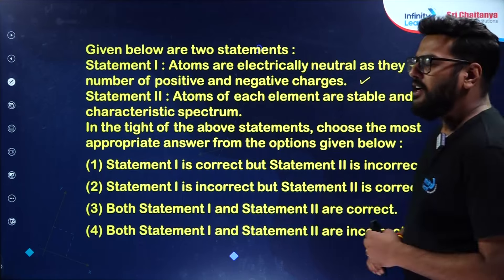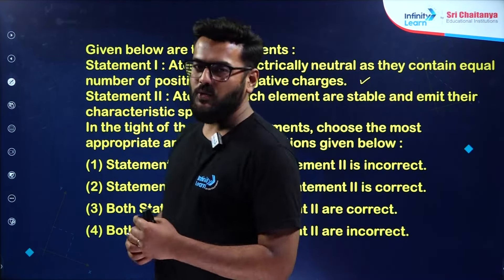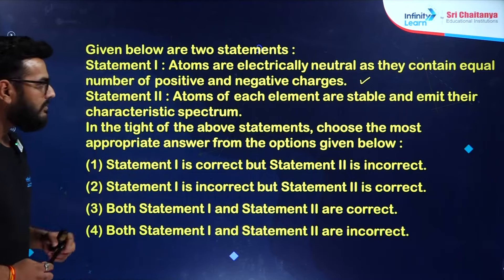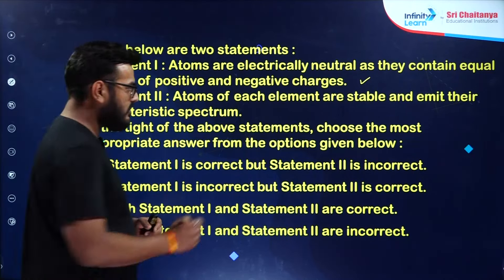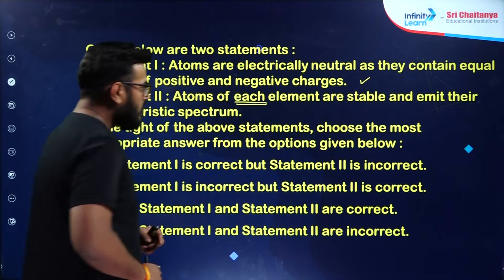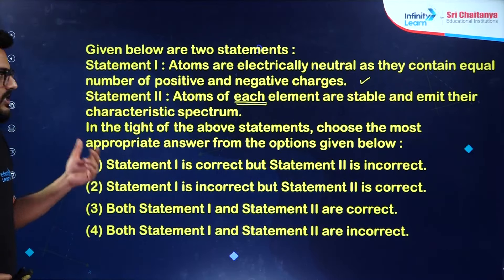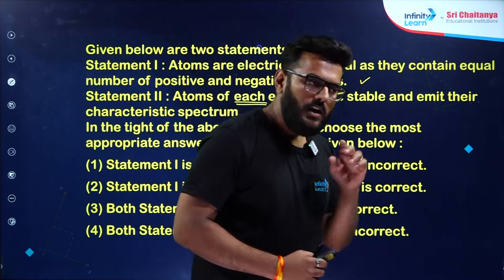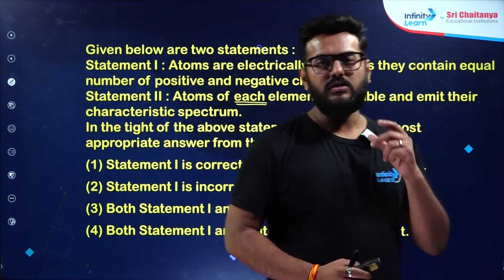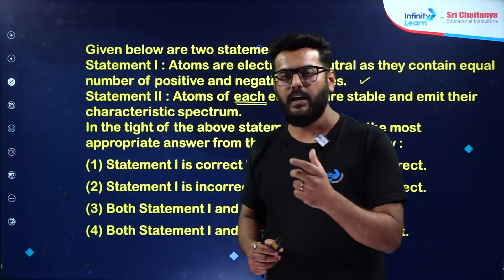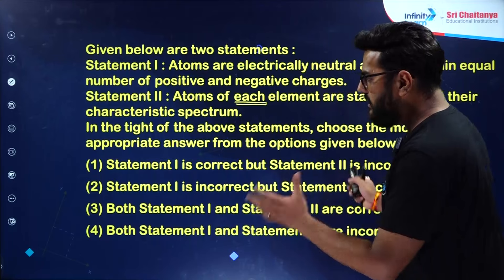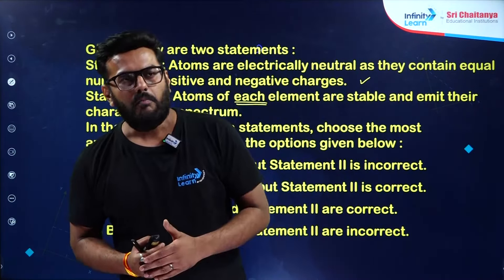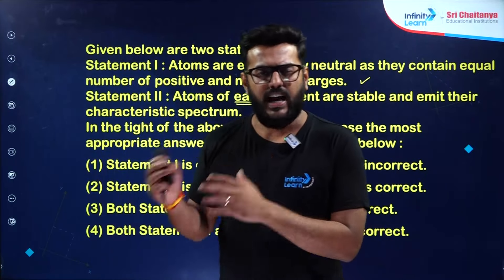Statement 1 is correct. The main bone of contention was Statement 2. Just look at this word 'each' — atoms of each element are stable and they emit characteristic spectrum. This statement was the main problematic thing in this particular question.